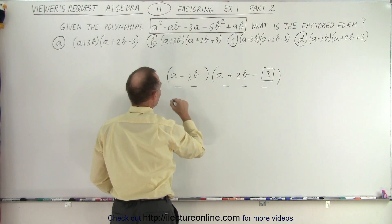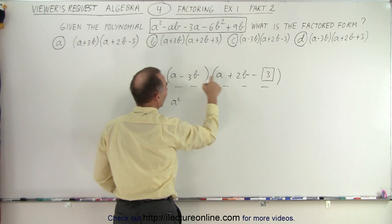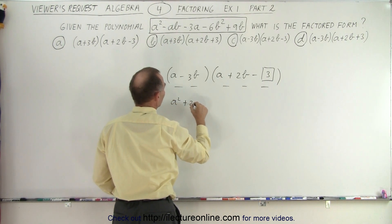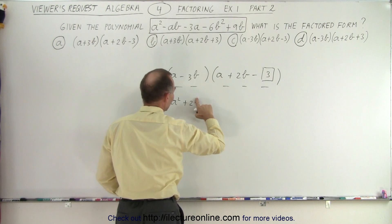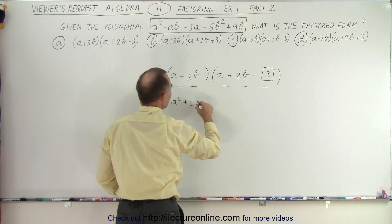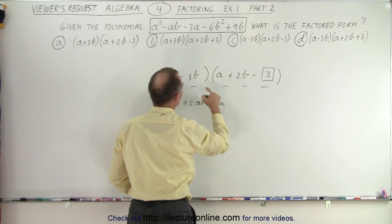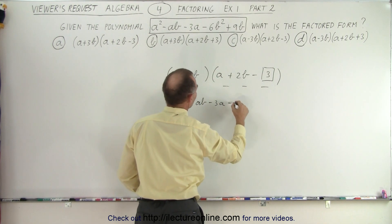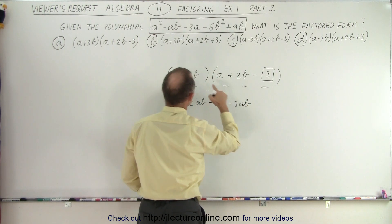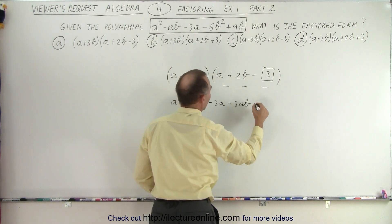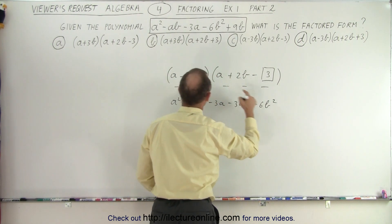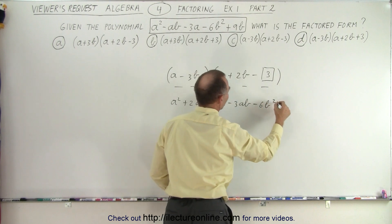So a times a gives me a squared. A times plus two b gives me a plus two b, or I should write a first, plus two a b. This times this gives me a minus three a. This times this gives me a minus three a b. This times this gives me a minus six b squared. And this times this gives me a plus nine b.